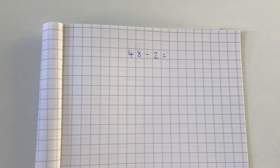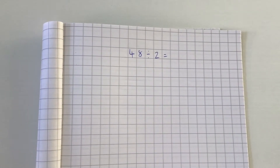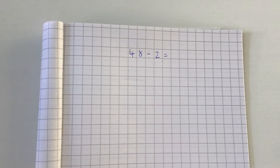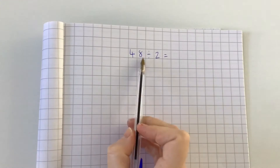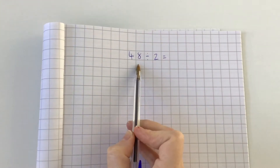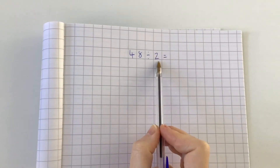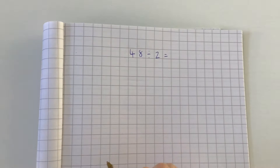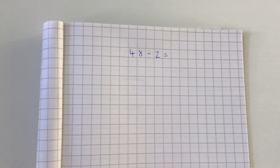Short division, sometimes called the bus stop method, is a written method used for dividing two-digit numbers by a one-digit number. So we've got 48 divided by 2 — 48 is our two-digit number and we're dividing by 2, which is our one-digit number. I'm going to start by showing you how to set out short division.